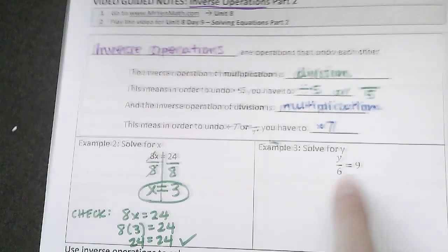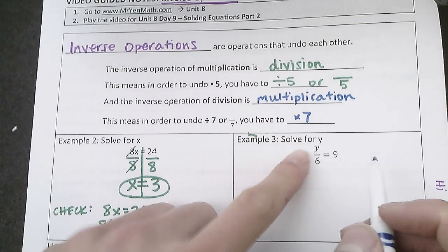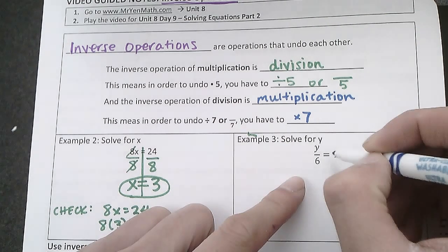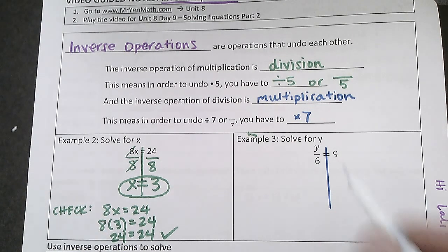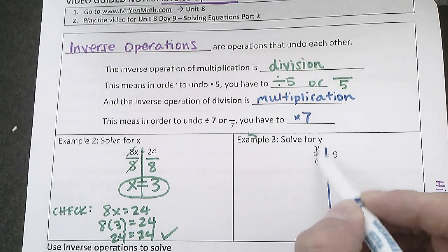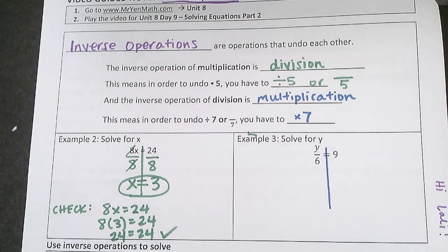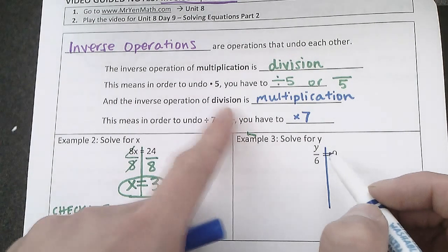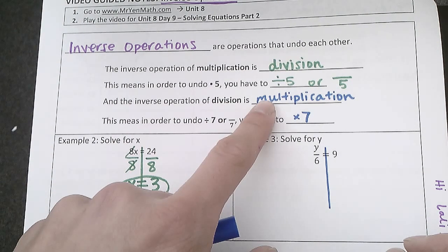Okay, so now let's try one that starts with division. So we're going to solve for y—we want to get y all by itself. We'll start by drawing a line down the middle for our equal sign. y divided by 6 equals 9. So if we're dividing by 6, the opposite, the inverse operation of division, is multiplication.